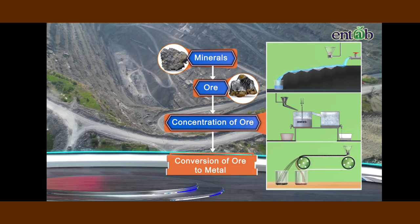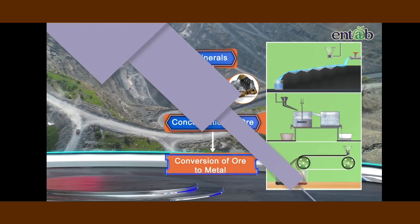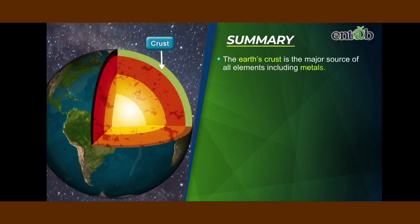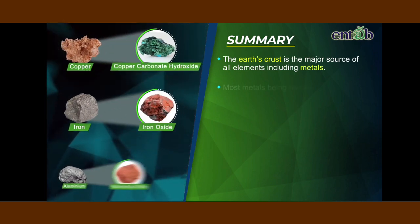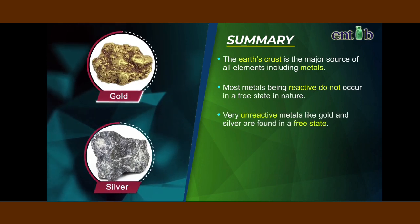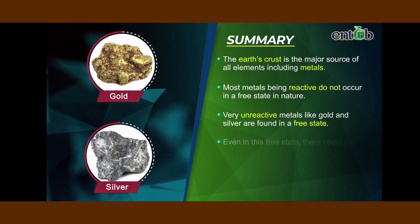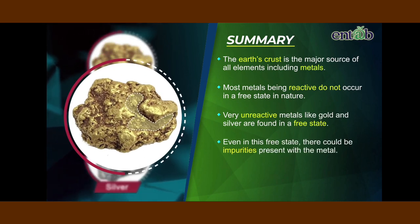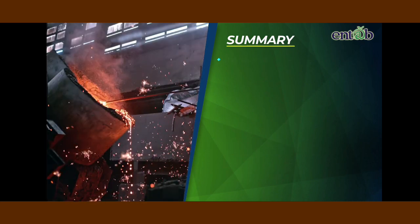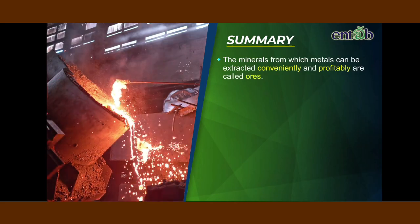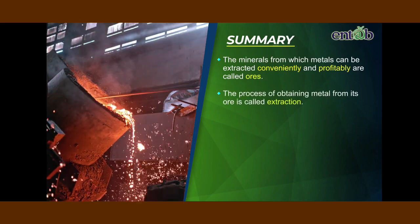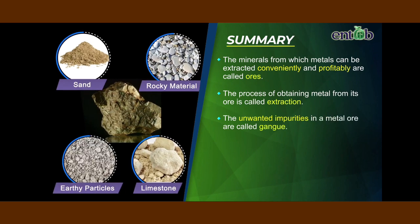In the next module, we shall learn how we extract metals from ores. Let us now recapitulate what we have learned in this module. The earth's crust is a major source of all elements including metals. Most metals, being reactive, do not occur in a free state in nature. Very unreactive metals like gold and silver are found in a free state, though even then impurities may be present. The natural substances which contain metals or metal compounds are called minerals. The minerals from which metals can be extracted conveniently and profitably are called ores. The process of obtaining metals from its ore is called extraction. The unwanted impurities in a metal ore are generally called gangue.